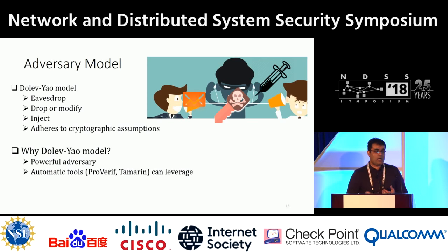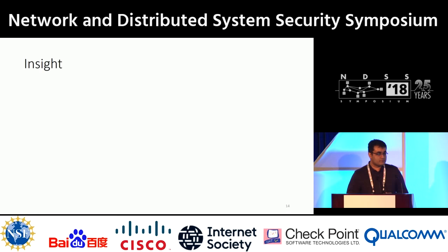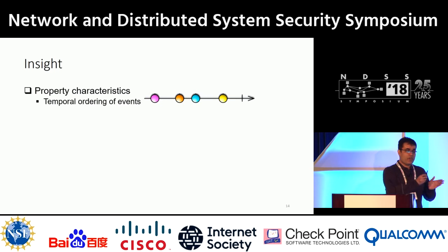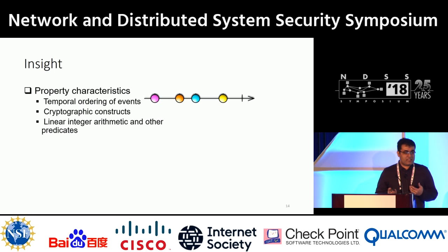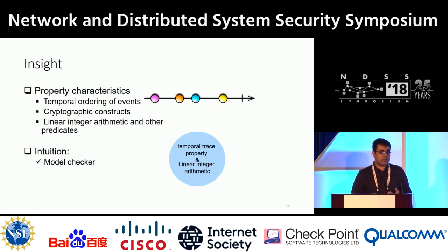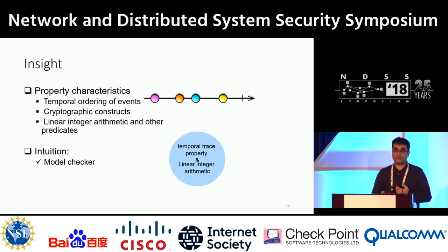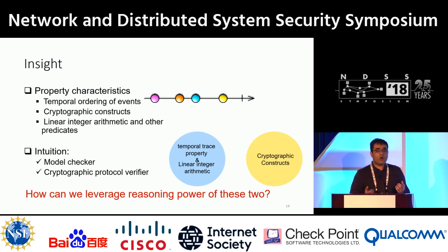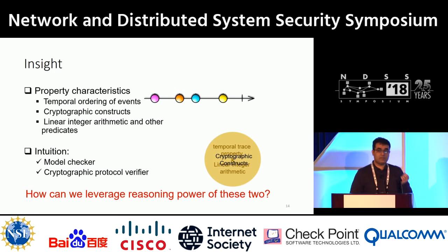There are also automatic tools like ProVerif and Tamarin that can leverage this attacker model. While analyzing the 3GPP specification, we identified a set of characteristics common among the properties we plan to verify: temporal ordering of events (e.g., if an event occurred, there must be another event beforehand), cryptographic constructs relating to secrecy and authenticity, and linear integer arithmetic constraints, usually used for checking sequence numbers. Model checkers are good at reasoning about temporal trace properties and linear integer arithmetic, whereas cryptographic protocol verifiers support unbounded parallel sessions and are good at specific safety properties like secrecy and observational equivalence. So we combine both to get the best of each.